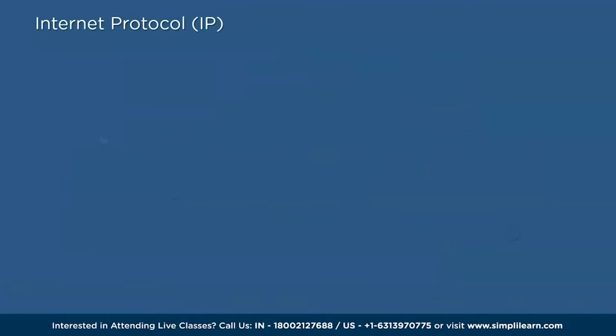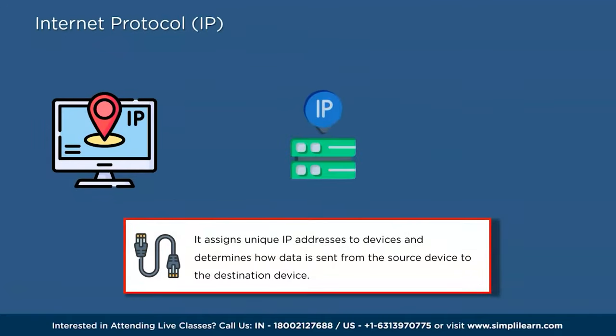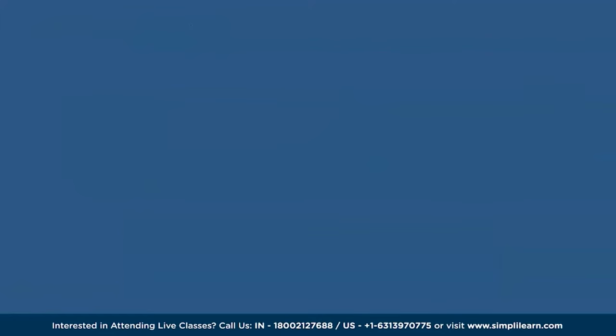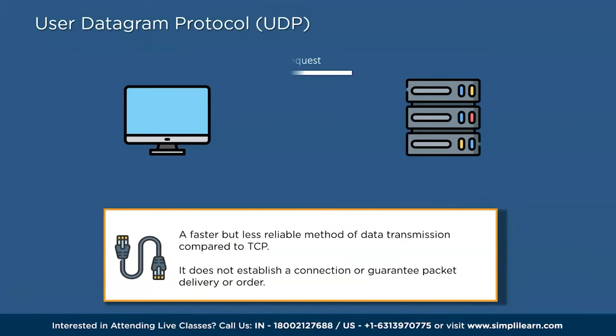The second type is IP, or Internet Protocol. IP is a network protocol that handles the addressing and routing of packets across the internet. It assigns unique IP addresses to devices and determines how data is sent from the source device to the destination device. IP ensures that data packets reach the right destination by routing them through various network devices like routers.